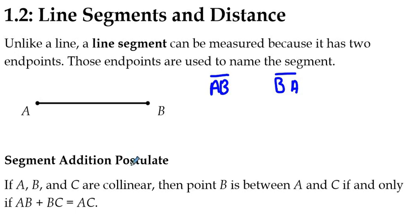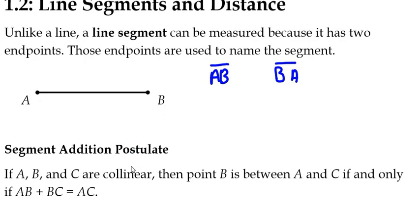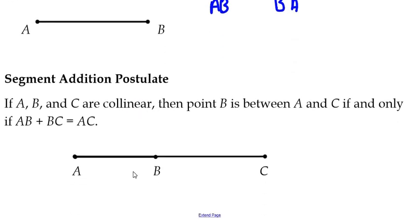So without further ado, the segment addition postulate in its glory is as such: If points A, B, and C are collinear, then point B is between A and C if and only if AB plus BC equals AC. So in a diagram here, you can see segment AB, the segment BC. If you add their two measures together, you'll get the length of the whole.